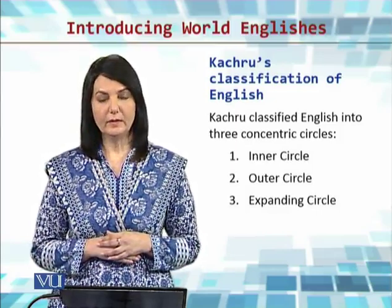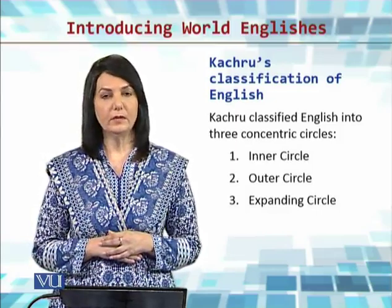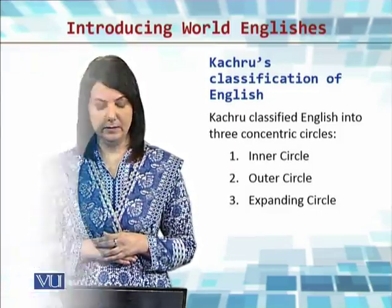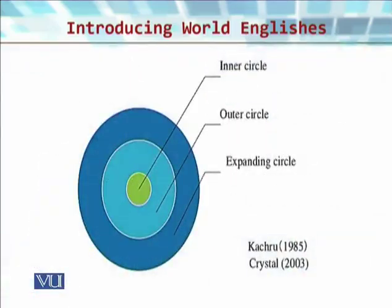Concentric circle means all these circles have the same center. He classifies English into inner circle, outer circle, and expanding circle. The inner circle comprises countries where English is traditionally used as the first language, or in other words, countries where English is used as a native language.